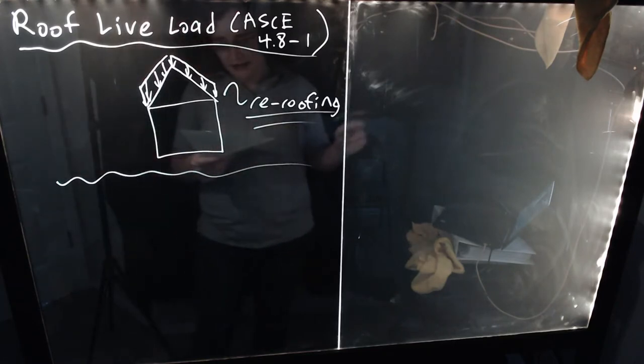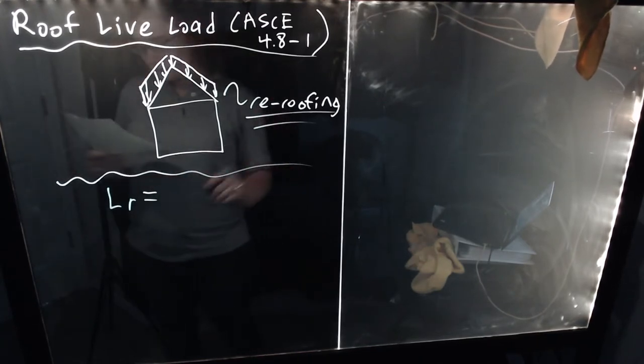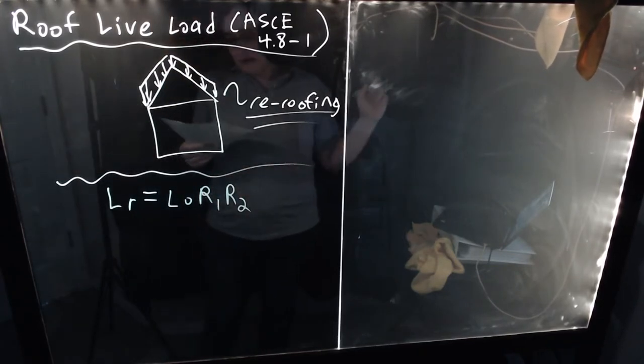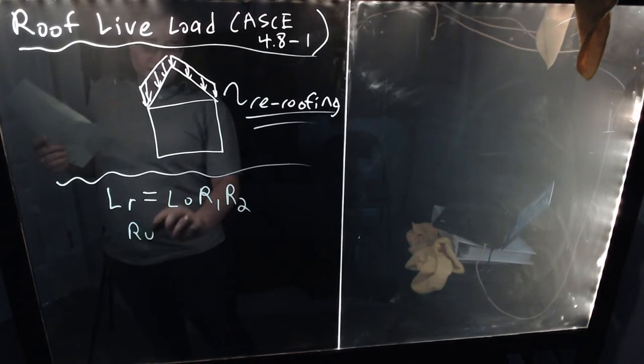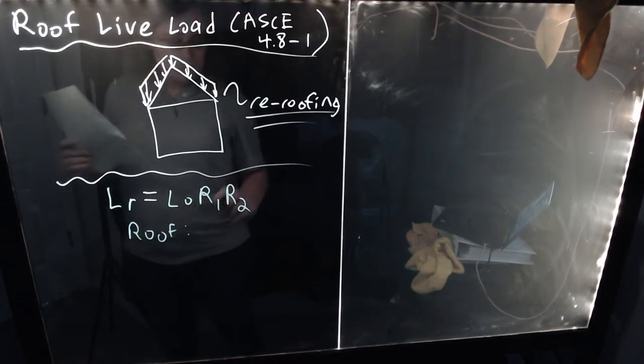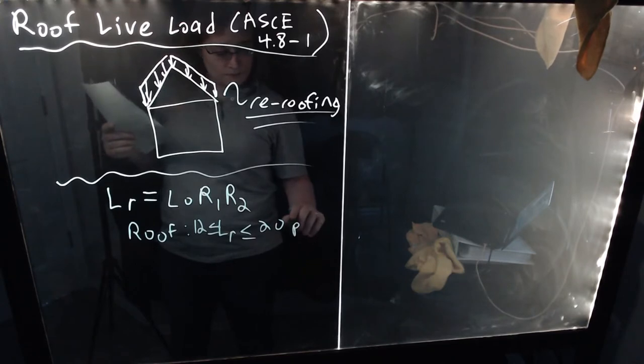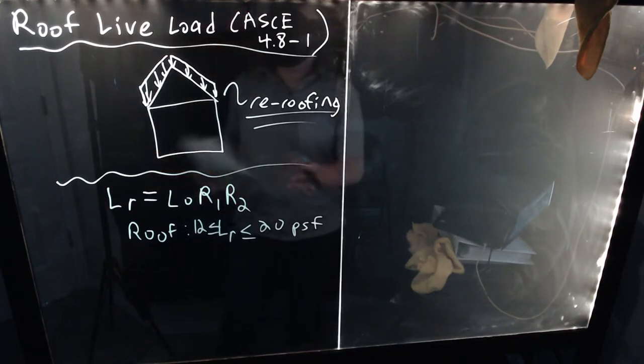So the governing equation is going to be 4.8-1, and this equation is LR equals L0 times R1 times R2. No D2, unfortunately. And this equation is going to be applicable when your roof, again, this is only for live load on roofs, but when your LR is between 12 and 20, and this is in pounds per square foot.